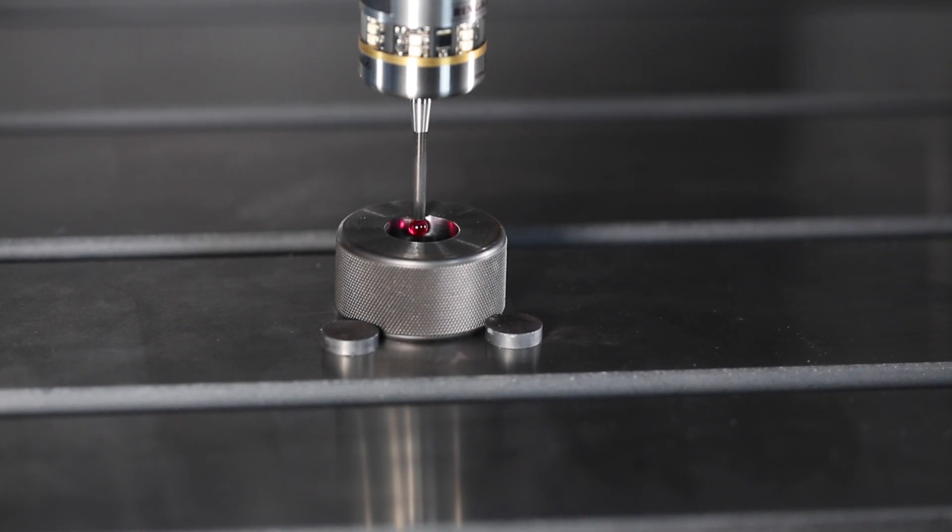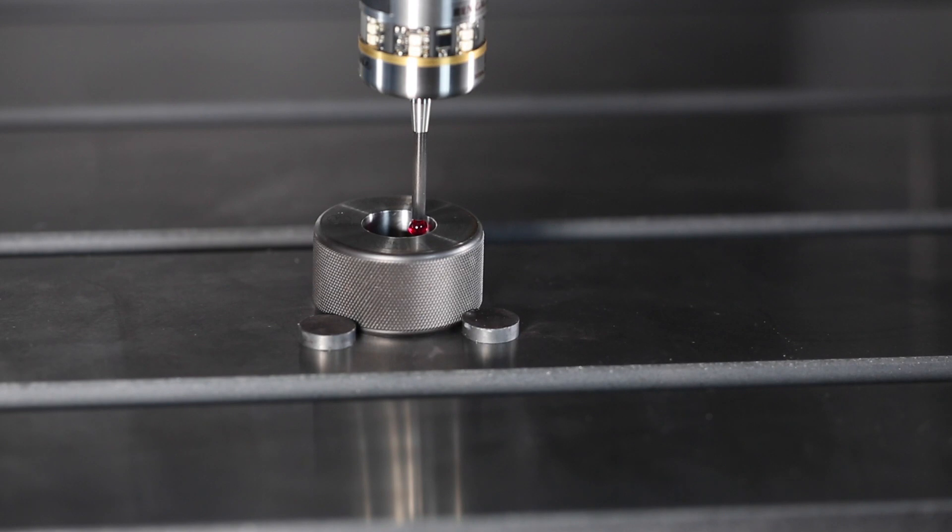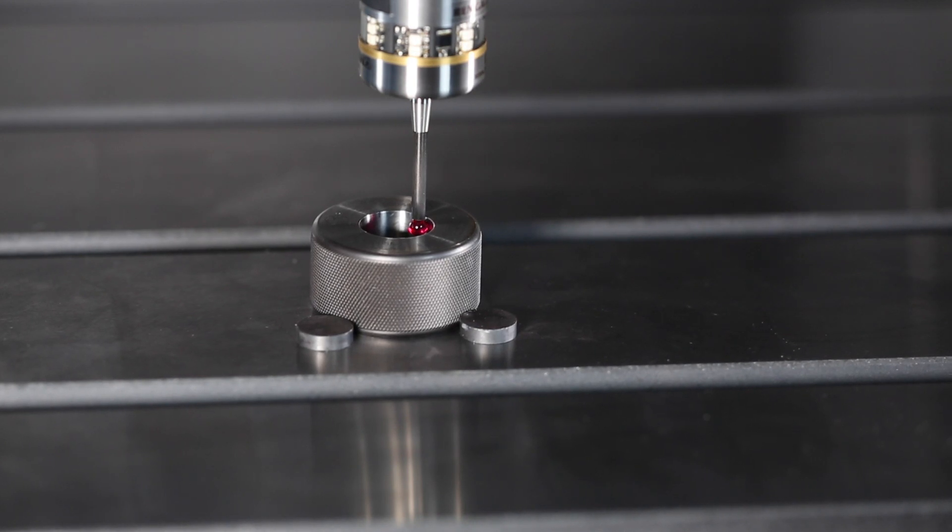Once the machine has completed calibration of the probe radius, we'll need to calibrate the length of the probe to a known height. You'll need a gauge block or some type of square block with a known distance.